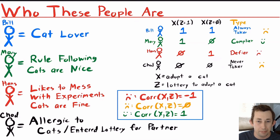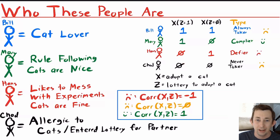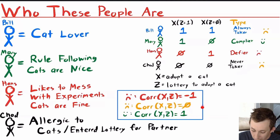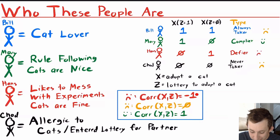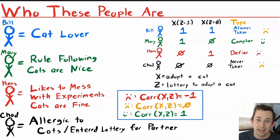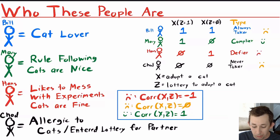Chad maybe entered the lottery because friends and family suggested a cat would help, but he doesn't really want one. Even if his name is drawn, he won't adopt — he's a never taker. To summarize with correlations: Hans has a correlation between X and Z of minus one; Mary has a correlation of one. For Bill and Chad, the correlation between X and Z is zero, since the instrument has no bearing on their behavior.